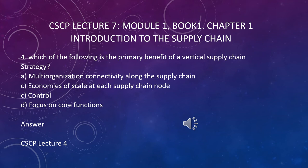Question number four: which of the following is the primary benefit of vertical supply chain? A is multi-organizational connectivity along the supply chain, B is economies of scale at each supply chain node, C is control, D is focus on core competency. The answer is control — C. You can check CSCP lecture 4. Control is the basic benefit of vertical integration, where you own everything from raw material extraction to distributors and end customers.